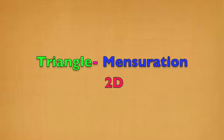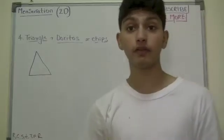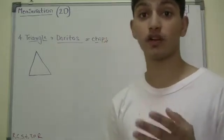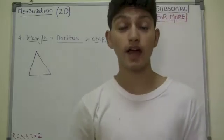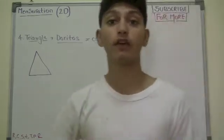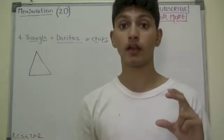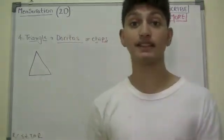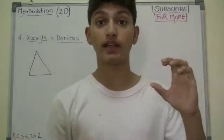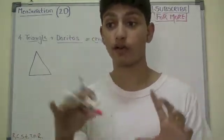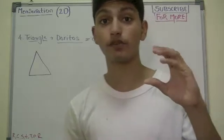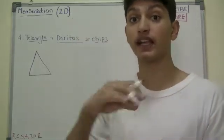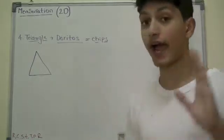We will be talking about triangle in this video. So here we move on to our fourth type of 2D figure which is known as triangle. Now triangle, we can think of a Doritos chip. Even though if you guys don't know what Doritos chips are, it's basically a snack that we get over here. Doritos chips are basically not perfect triangles, they are basically curved triangles. But the idea is the same.